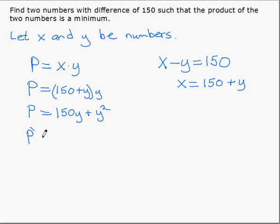So the derivative of the product function is 150 plus 2y. Now, we set the derivative equal to zero, which will find the critical numbers, which are possible max-min values.